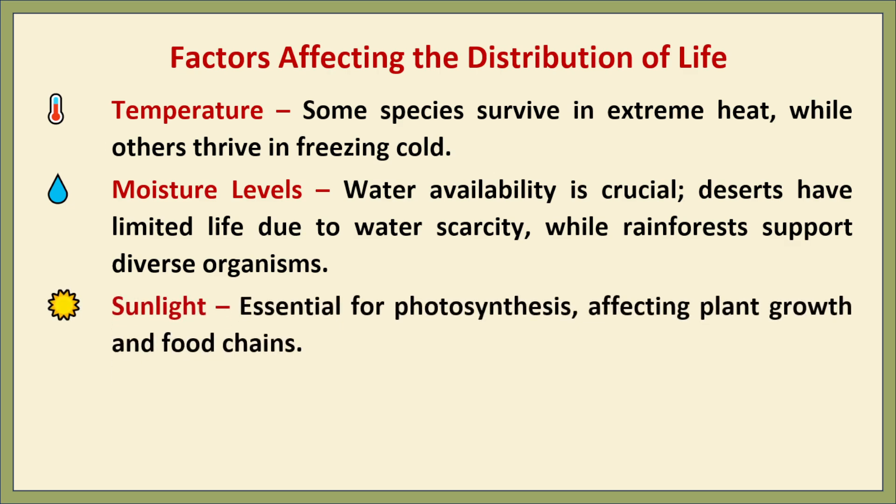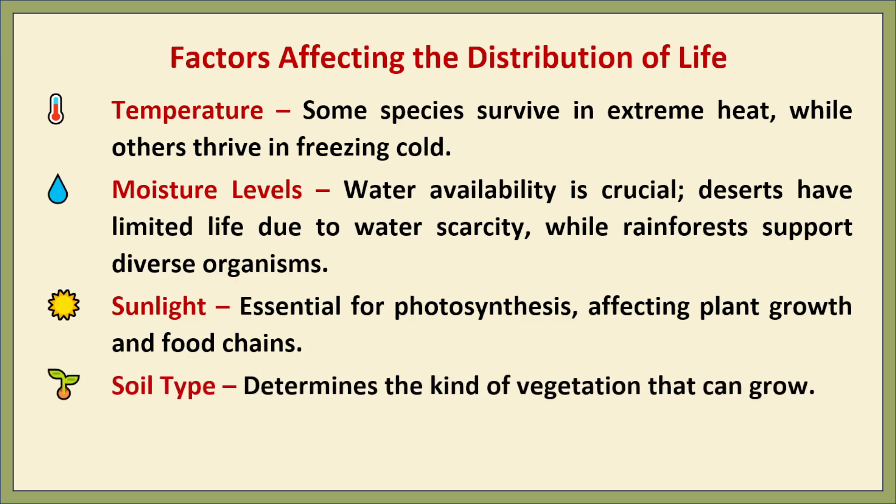Sunlight is essential for photosynthesis, which powers the entire food chain. Areas with more sunlight tend to have richer plant life, while deep sea zones with limited light have organisms adapted to darkness. Soil type also matters — fertile soils support forests and agriculture, while sandy or rocky soils limit plant growth. Soil composition affects which plants can grow, and in turn which animals can survive in an area.